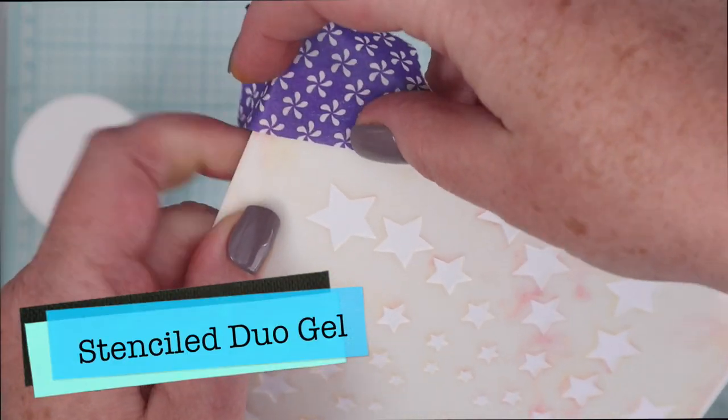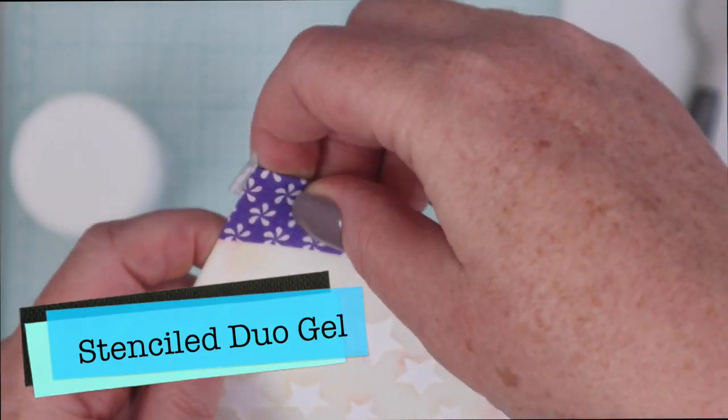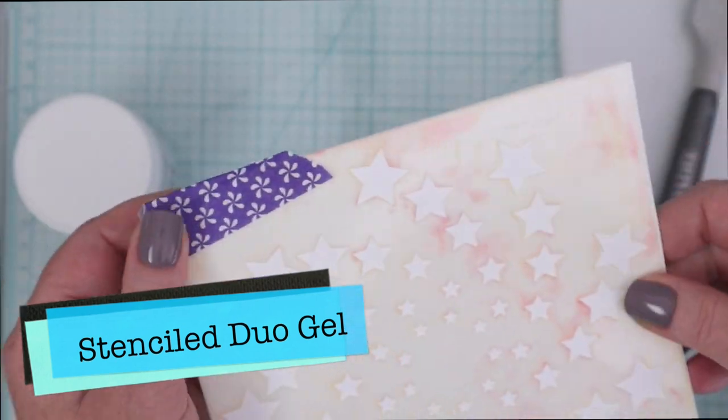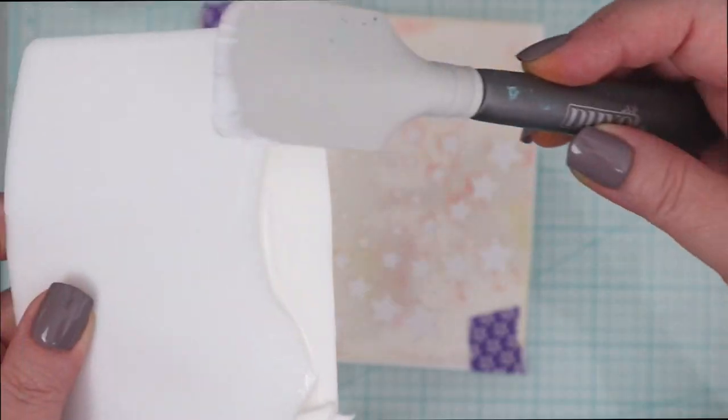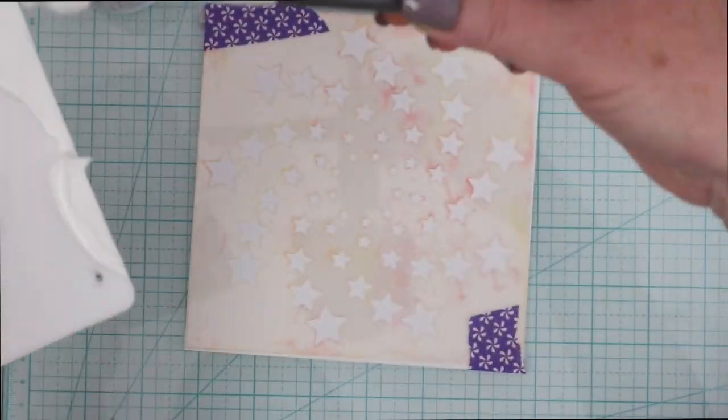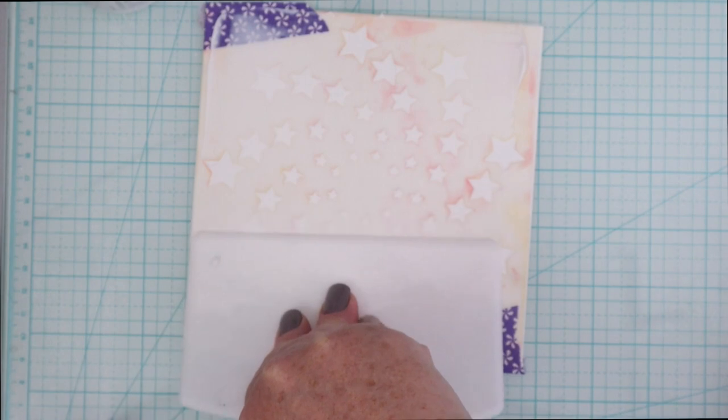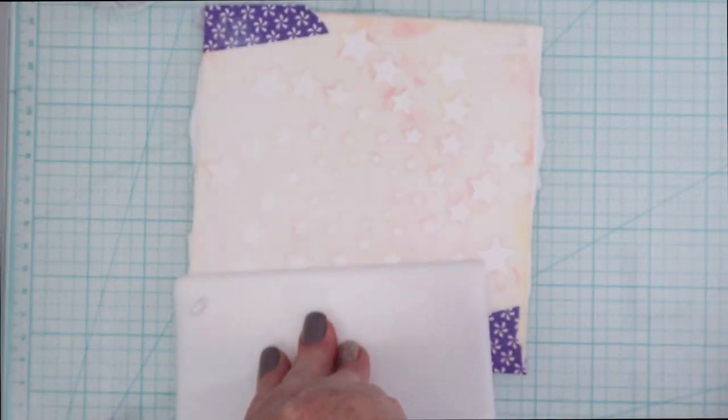Of course you can just use the Flock Sheets as is, but you can also have fun applying them in patterns using ThermoWeb's Duo Gel stencils. And here, this technique is two for one because you also get to use the Flock Sheet where the stencil pattern has been removed. Normally I use Pixie Spray with stencils, but I don't want any adhesive on the cardstock. So I am going to use purple tape to hold the corners in place and then DecoFoil Transfer Gel Duo. The Duo means you can use heat or pressure to apply.